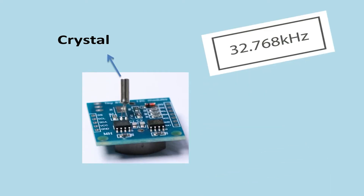One characteristic of the DS1307 module is the external crystal. The external crystal runs at 32.768 kHz. As you know, crystals are affected by temperature and are very sensitive to it. Because of this, these kinds of modules usually use temperature sensors to compensate.